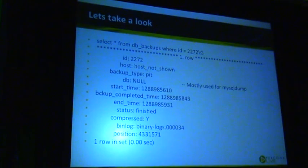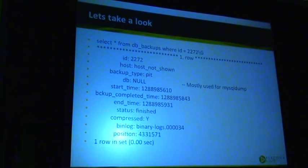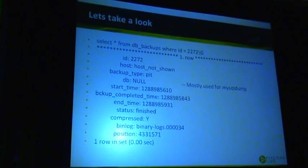As you can see, you get your primary ID, the host (not shown because it's real data), and the backup type is PIT — point-in-time. There are three backup types: PIT, MySQL dump, and ETL. DB is null for PIT because it's used for MySQL dump, which runs on a per-database basis. Then start time, backup completed time, end time, status (finished), compressed (yes). Also the binary log and the position at which the backup was taken, so I can look at this one table, find the backup I need, get my CHANGE MASTER TO statement, binary log name, position, and go.